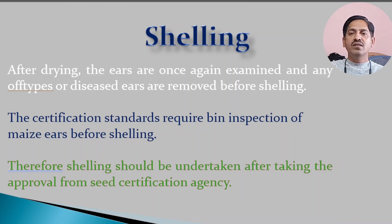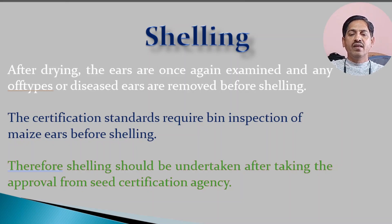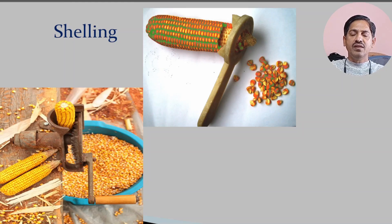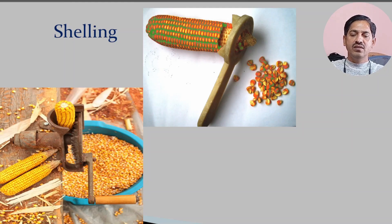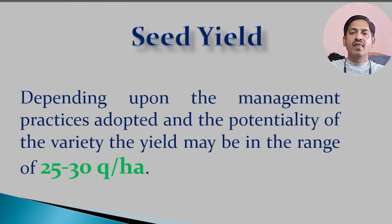After harvesting comes shelling. During shelling of any maize crop, the seed certification standard requirements must be fulfilled, and you must take approval from the certification agency before shelling. Shelling means the removal of seeds or kernels from the cob without damaging the embryo. This is how shelling of the maize crop is carried out.